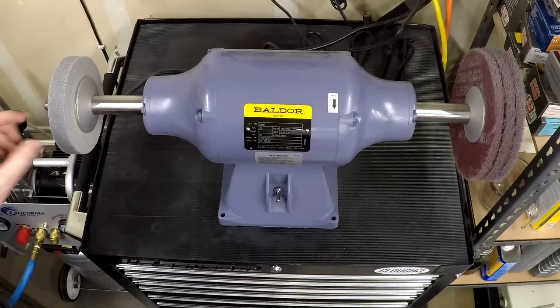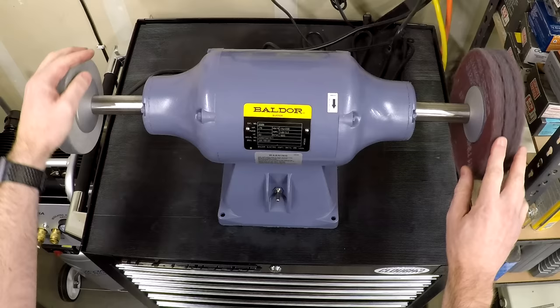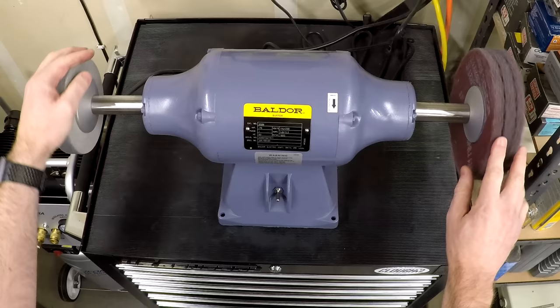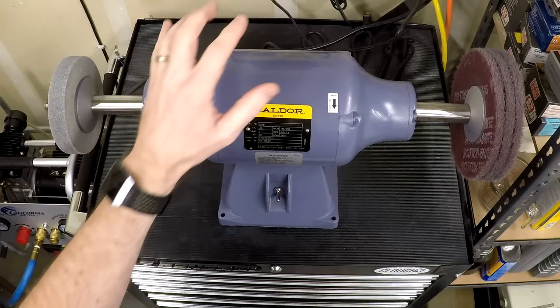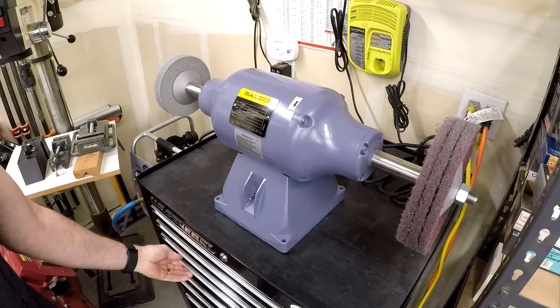Coming in at number five on the list is my Baldor buffer set up with deburring tools. So I've got a Scotch-Brite wheel on this side. So it's a soft wheel with grit impregnated in it, not a hard grinding wheel. And on this end, I've just got Scotch-Brite pads. So they're a little bit softer and conform a little bit better to the surface of anything that you use these on. Now, I haven't had this very long, but since I've had it, I have used it for everything. I love how fast this thing spins up and how quiet it runs.